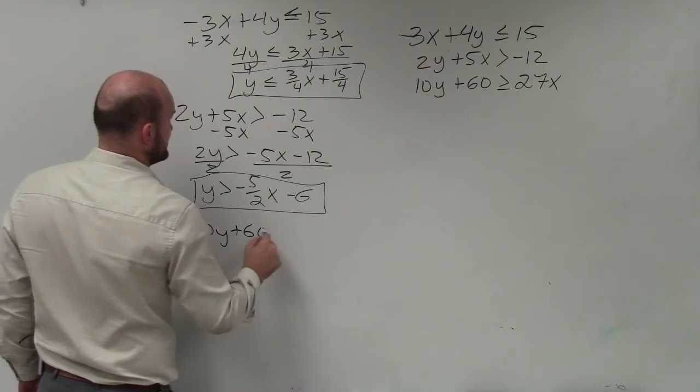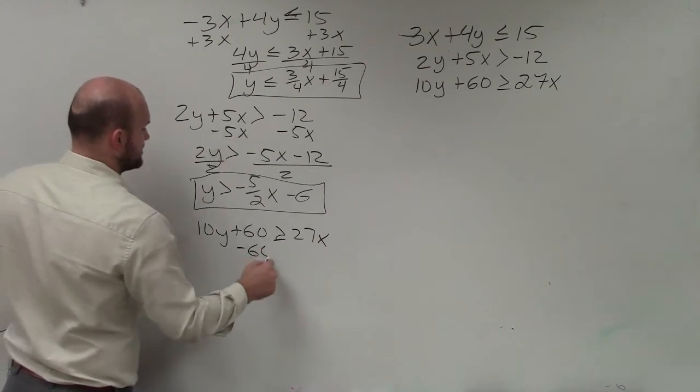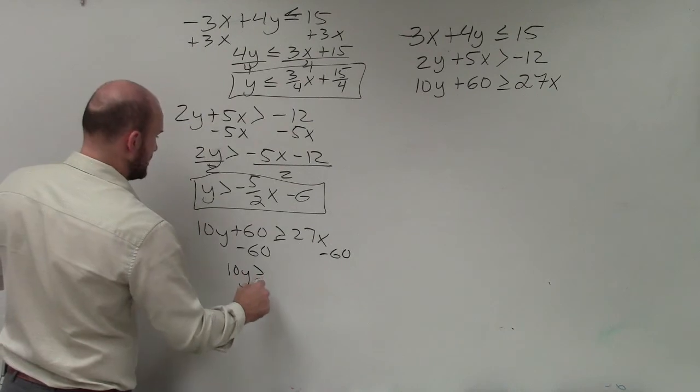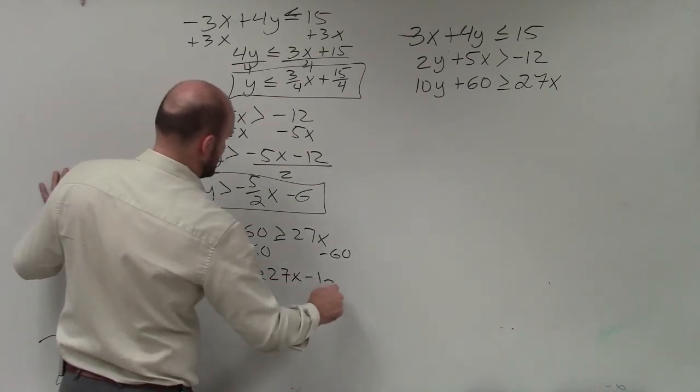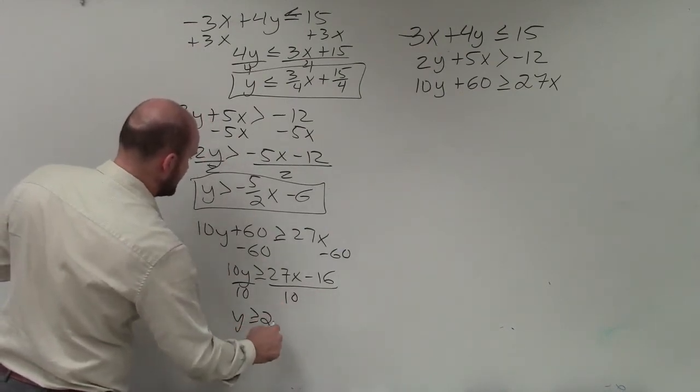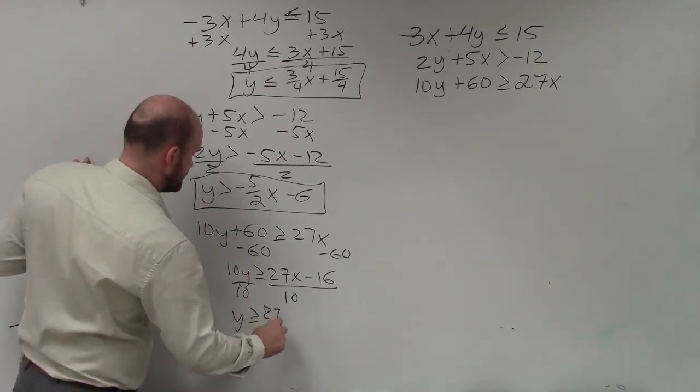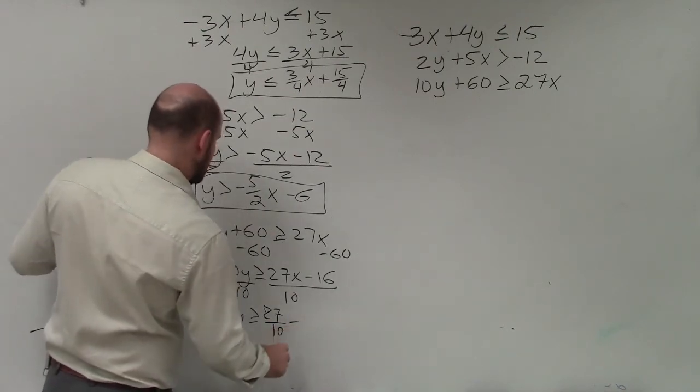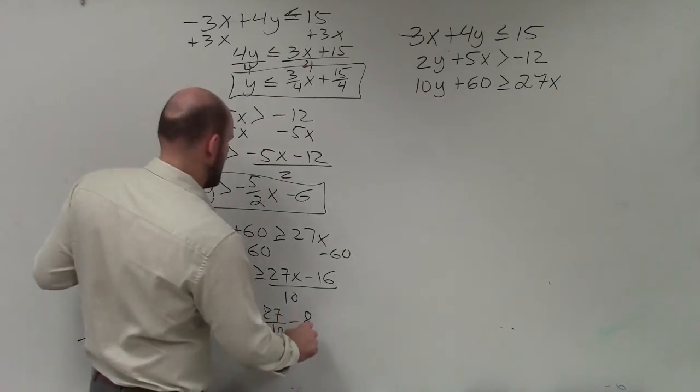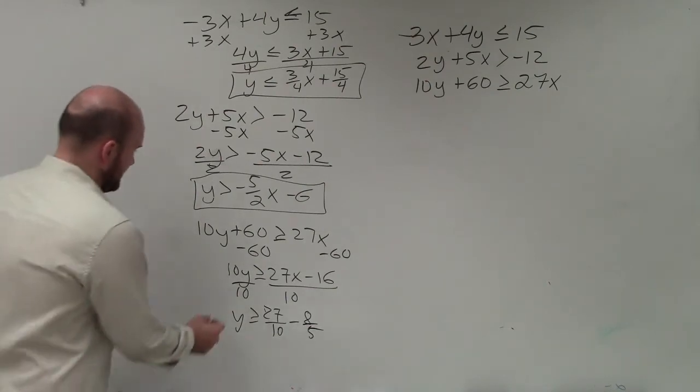Now I'll do the third equation. So I have 10y plus 60 is greater than or equal to 27x. So I subtract 60. And I get 10y is greater than or equal to 27x minus 60. Divide by 10. And then y is greater than or equal to 27 tenths x minus 8 over 5. Man, this does not sound like fun at all. So I guess I'm going to do my best as kind of estimating. But here's my third equation.